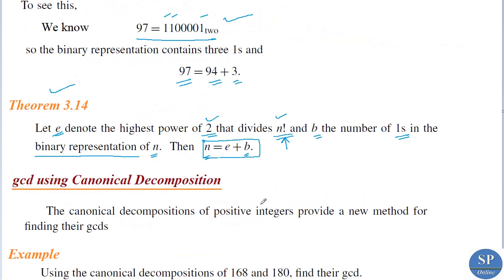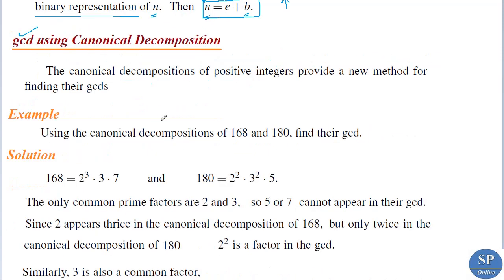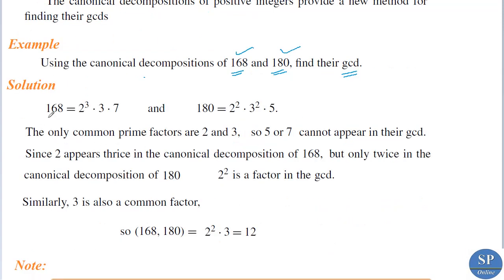We can also use the canonical decomposition to find the GCD. For example, using the canonical decomposition of 168 and 180 to find their GCD: 168 = 2³ × 3 × 7 and 180 = 2² × 3² × 5. The common prime factors are only 2 and 3, since 7 appears in 168 but not in 180, and 5 appears in 180 but not in 168.